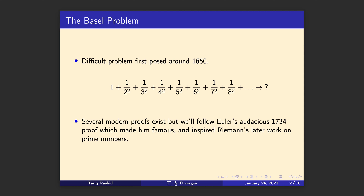It was quite an audacious proof in the sense that Euler made some interesting leaps of logic which by today's standards were perhaps not that rigorous. There are lots of modern proofs today, but we want to keep the maths required simple. So we'll follow Euler's method, noting that he made leaps that weren't justified at the time but were justified later — it's quite exciting historically and mathematically, so let's dive in.